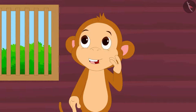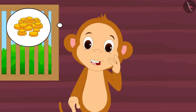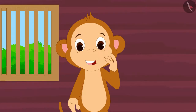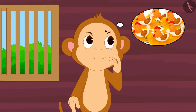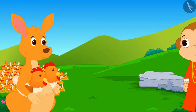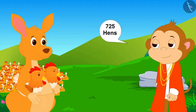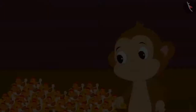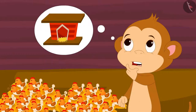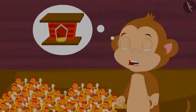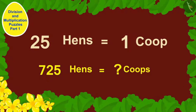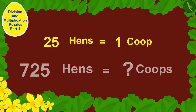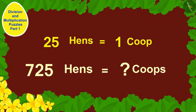Babban made a lot of profit from his new shop. Now Babban is thinking that he will start a poultry. Babban bought 725 hens. He thought: I have to build coops for these hens. If I keep 25 hens in each coop, how many coops will I have to build?